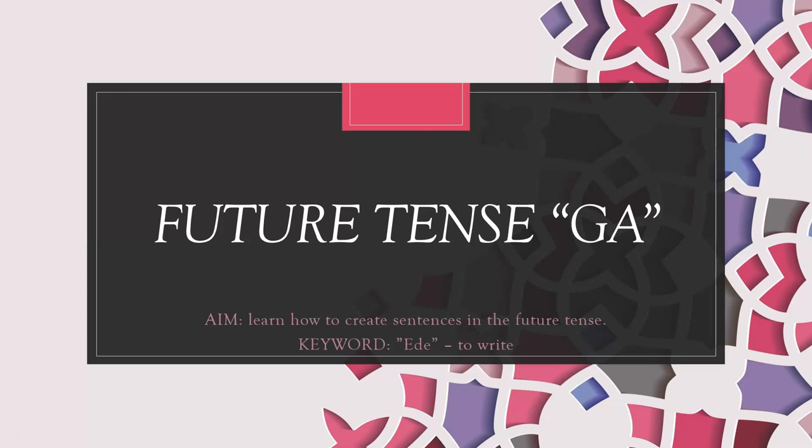Our keyword for today is 'ede,' which means 'to write.' One thing you need to understand in the conjugation of the Hebrew Future Tense is the word 'ga.' To create a future tense, we add the word 'ga' plus a hyphen, then our word. You're going to see examples of these so it can make more sense.